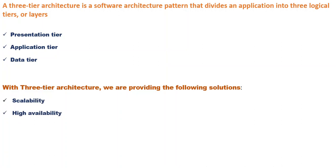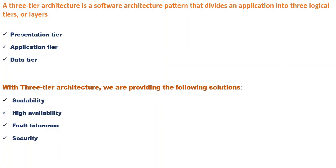Having a highly available infrastructure is very crucial, because you don't want to be having complaints that your application is not available. So this is the second solution. The third solution is fault tolerance — you should be able to have an infrastructure that is fault tolerant. The fourth one is security. You and I know that security is very, very important.